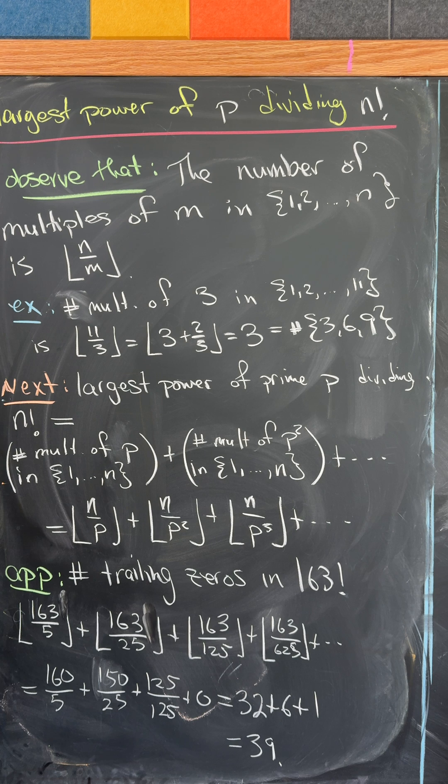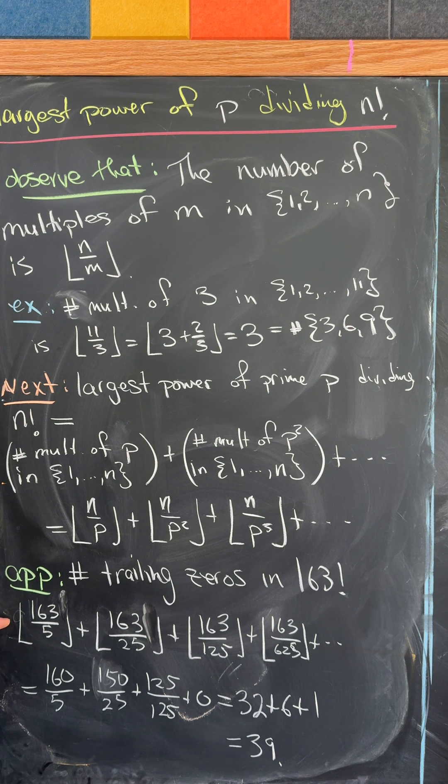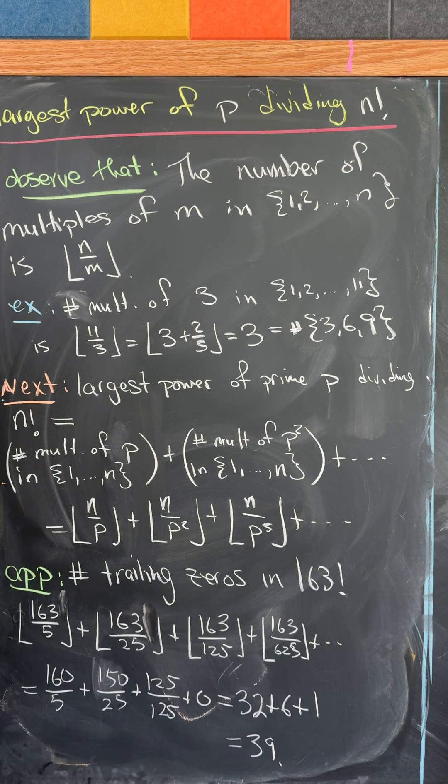As an application, let's find the number of trailing zeros in 163 factorial. So that means we need to look for the number of multiples of 10, but really we just need the number of multiples of 5. So we've got the floor of 163 over 5 plus 163 over 25 and so on and so forth. And after the calculation, you get 39.